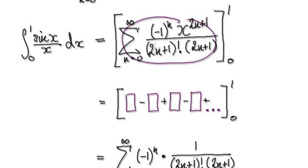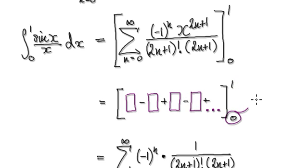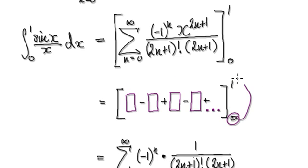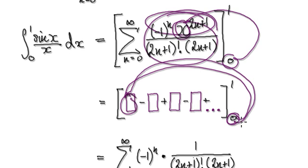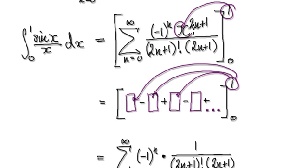We now have a whole series and we need to evaluate it from 0 to 1. Putting 0 into the expression: since every term contains x, putting 0 in makes the whole thing zero. Putting 1 in: 1 to the power of anything is 1, so every x^(2n+1) block evaluates to 1.